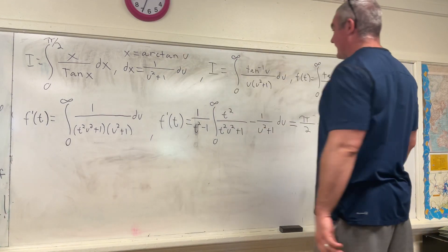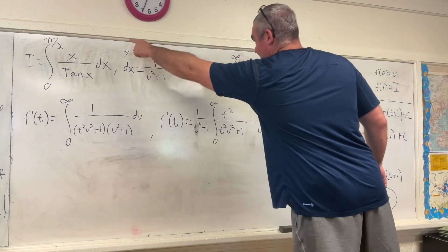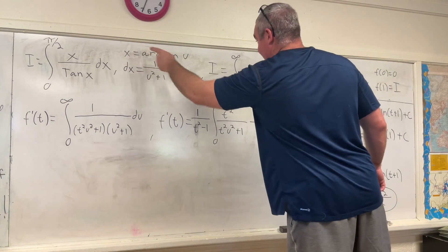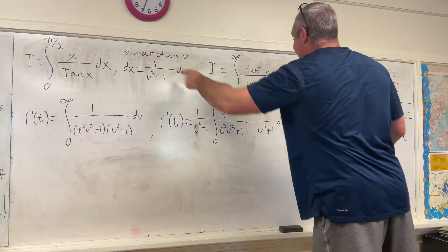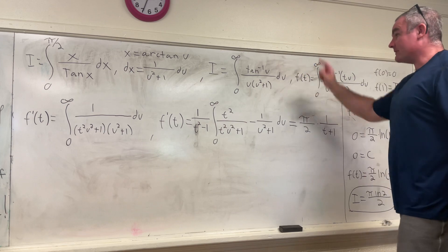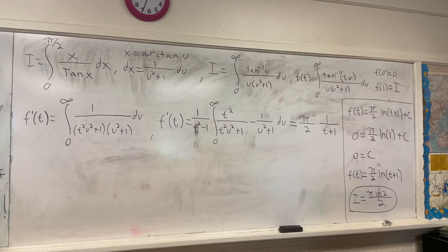Over tangent x, tangent x becomes, if you take tangent on both sides of this, you'll just get tangent x equals u. That's right there. Our dx changes to 1 over u squared plus 1 du. So that's just a little rewrite there.